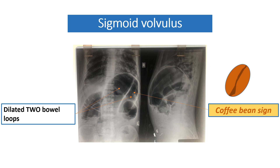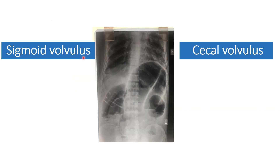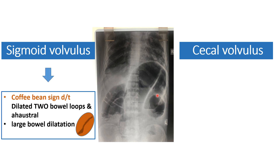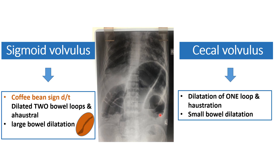We need to differentiate sigmoid volvulus from cecal volvulus. In sigmoid volvulus, as in this X-ray, you can see the characteristic coffee bean sign due to two dilated bowel loops with no haustra, and large bowel dilatation can be visible in other parts of the abdomen. In cecal volvulus, only dilatation of one loop with haustration and small bowel dilatation will be visible. It is important to differentiate these two conditions because in sigmoid volvulus, only flatus tube insertion is needed for conservative management, while in cecal volvulus, surgical management is required.